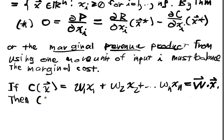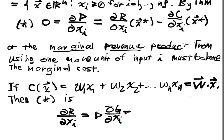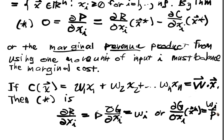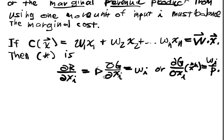Well, the marginal product revenue, or revenue product, is equal to p times dg/dx_i, which will have to equal w_i. Or, dg/dx_i at x* has to equal w_i over p.